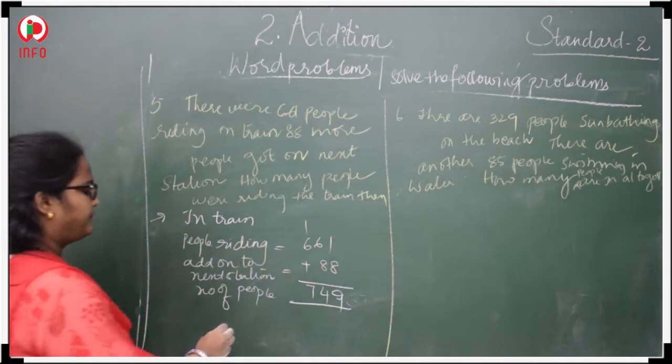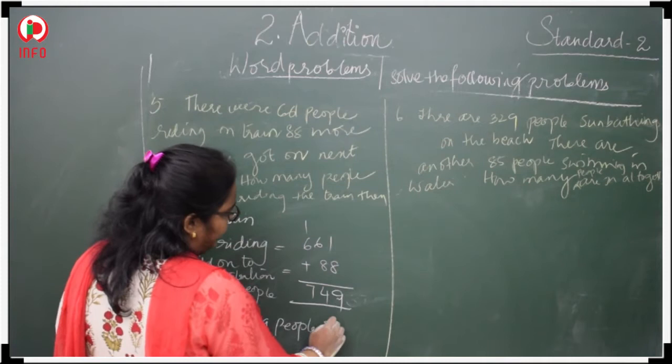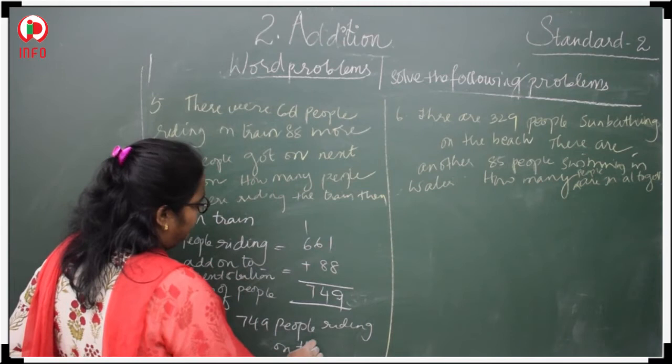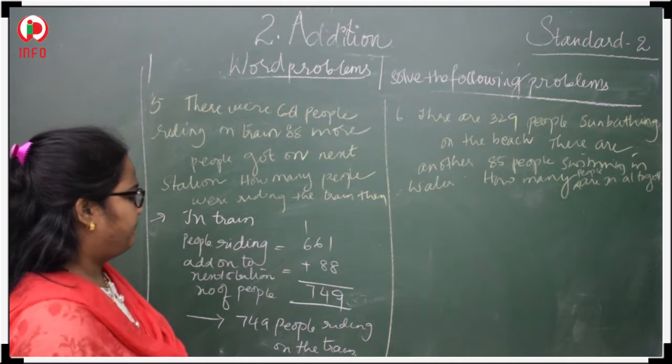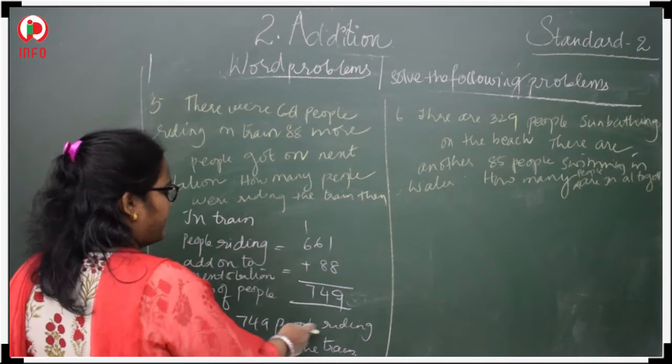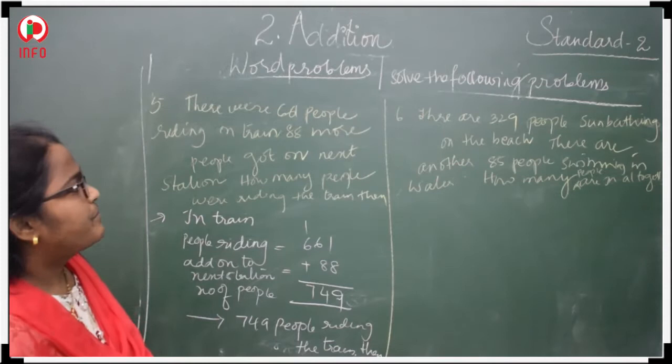So how many people were riding? 749 people riding on the train. In the train or on the train. How many people were riding the train then? 749 people. Next.